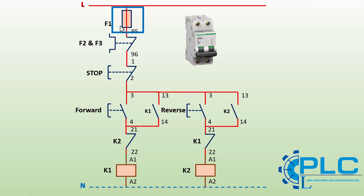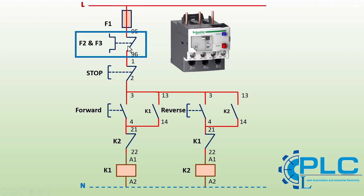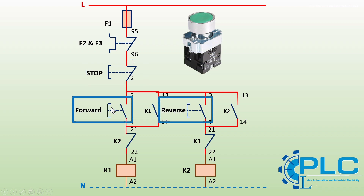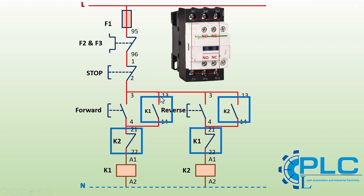The fuse's primary function is to protect the circuit from short circuits. Next is the thermal overload relay, which safeguards the motor against overload — when it trips, the control circuit opens, stopping the motor. Then we have the normally closed (NC) push button and the normally open (NO) push button, each with their own schematic symbol. Finally, contactor auxiliary contacts — each contactor typically has two auxiliary contacts: one normally open (NO) and one normally closed (NC).